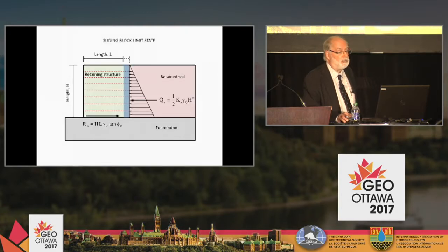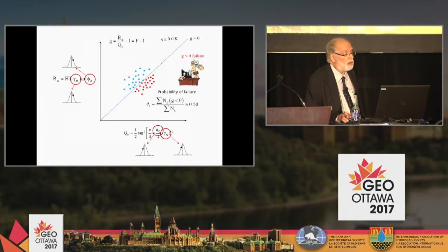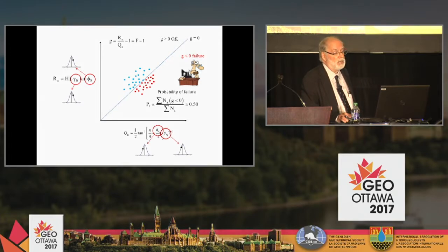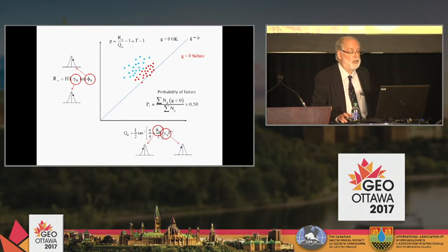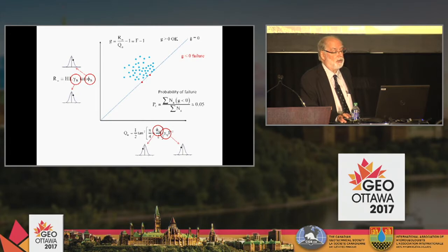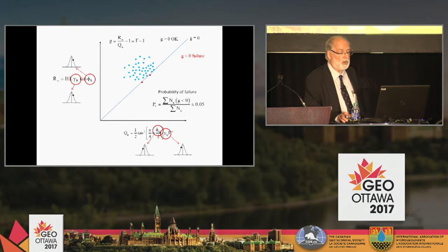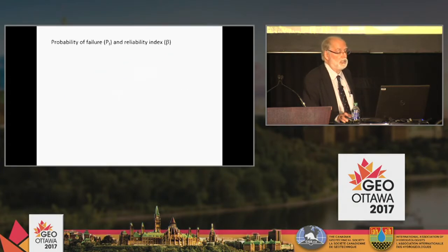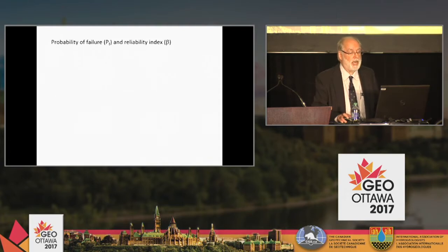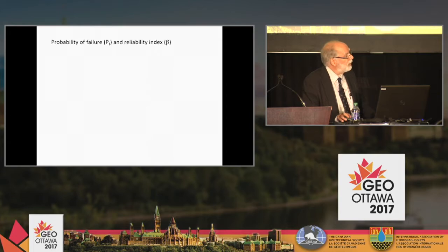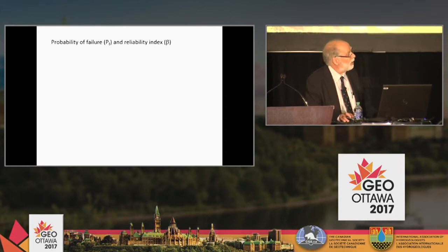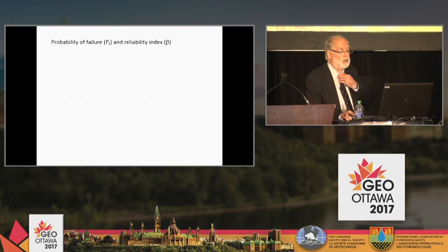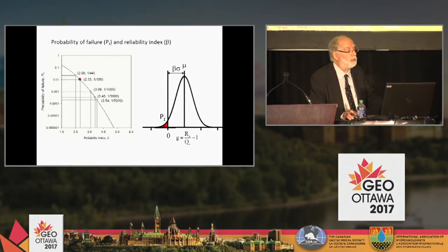What can we do to fix the problem? We make the gravity block longer. If we do this, the data points move up and the probability of failure decreases to 5%. But is this enough? We understand the notion of probability of failure — it's fairly straightforward. But we hear the term reliability index when we talk about limit states design. What is the relationship between reliability index and probability of failure?